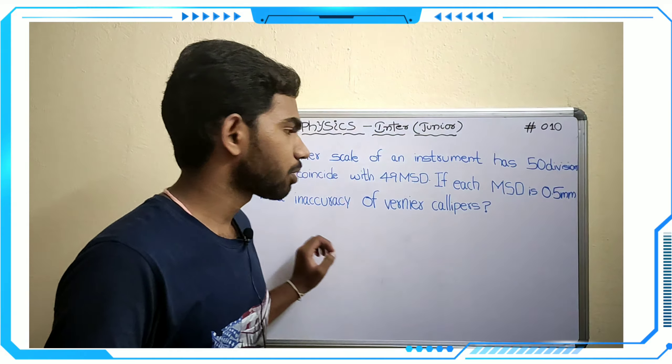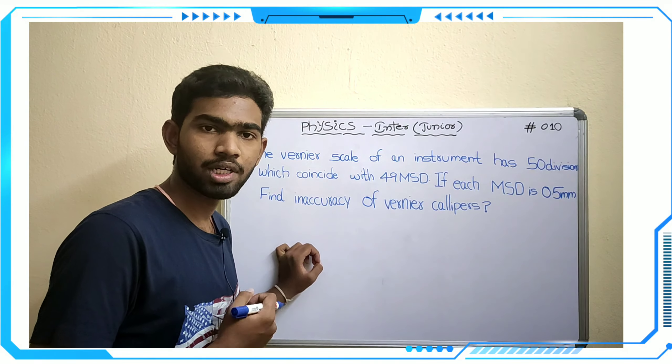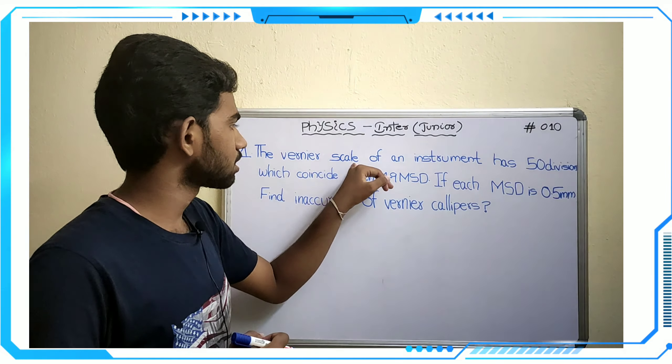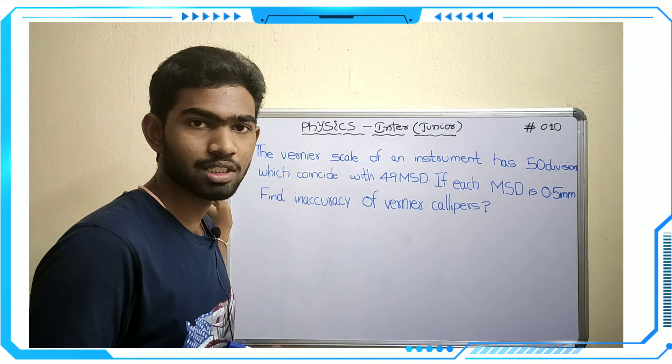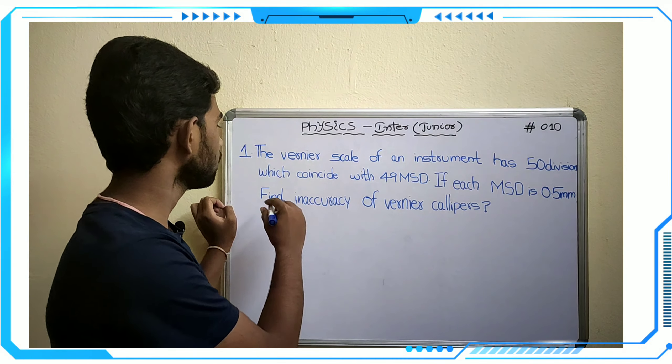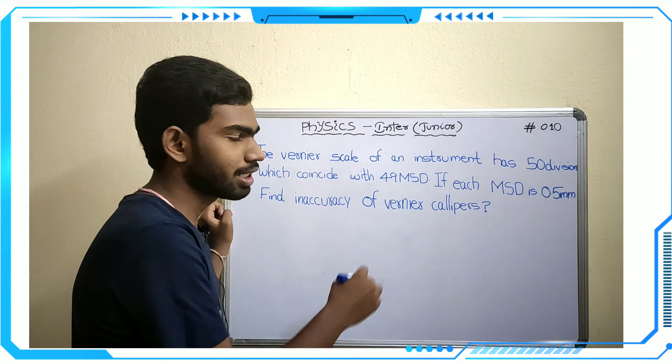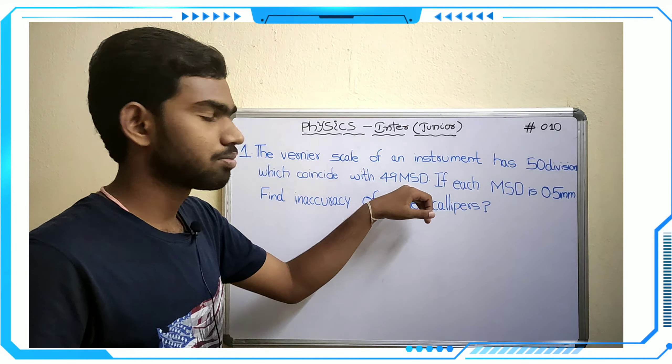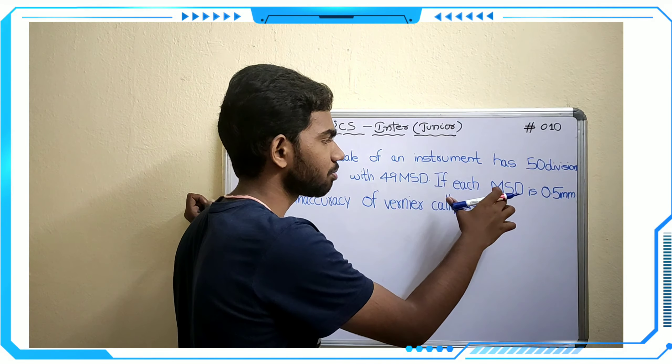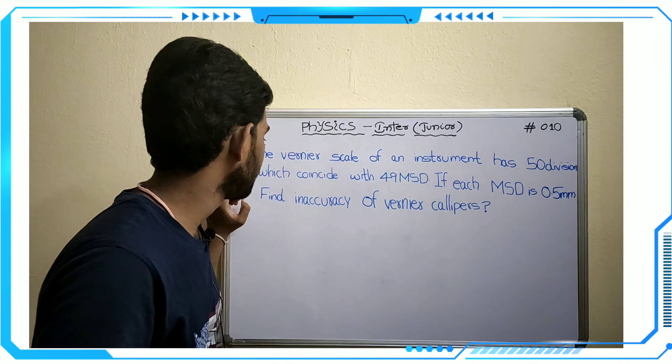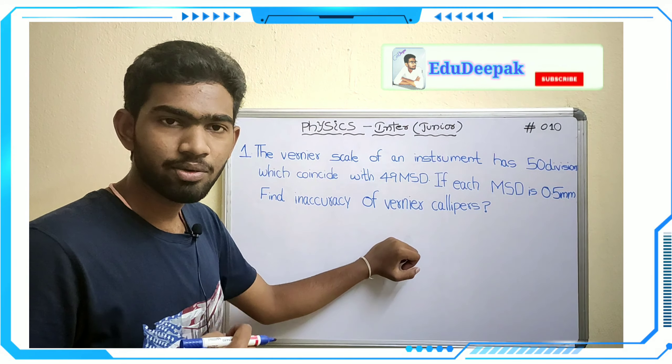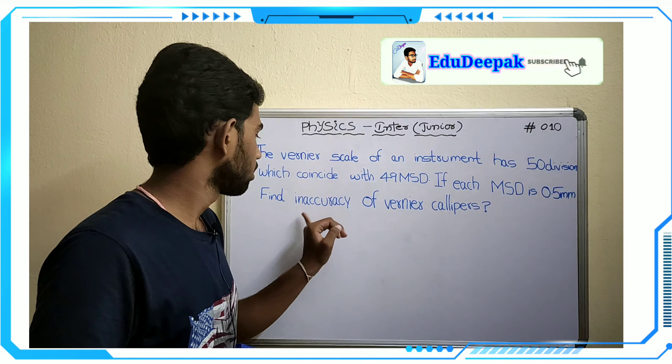In this problem section, the first problem is very important. The vernier caliper scale of an instrument has 50 divisions, which coincides with 49 MSD, main scale divisions. If each main scale division is 0.5 millimeters, find the inaccuracy of vernier calipers. Firstly, we have to think about the inaccuracy, minimum inaccuracy formula.